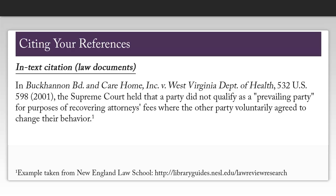There are two primary ways to cite your sources using Blue Book style. It's important that you check with your professor or the journal you plan to publish in to ensure you are citing in the way that they want you to. For law documents, such as briefs, you will cite your sources in the body of the paper. Whereas for academic documents, you will cite your sources in footnotes or occasionally endnotes.